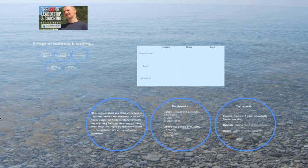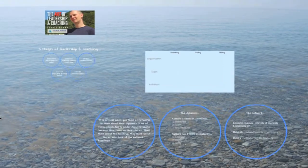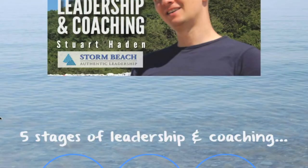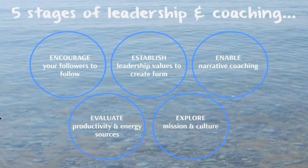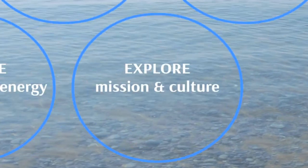Okay everyone. I hope that interview with myself and Jaz was interesting for you. To finish up on chapter five, section five, which was around energy. Now we're on to six, which is around exploring mission and culture here on the Art of Leadership with myself, Stuart Hayden. We've looked at four different areas so far, so we've actually only got one more to complete, plus our final outro, which throws in a few bonus balls. We've looked to encourage our followers to follow, establish values for leadership to create form. We looked at the narrative coach and how we enabled that, so evaluating productivity and energy sourcing is our last stop before we got here.